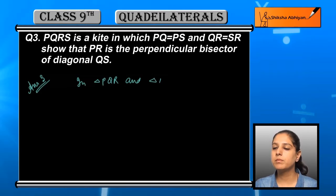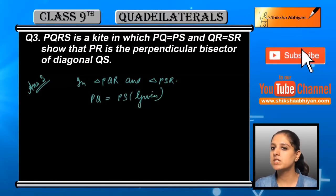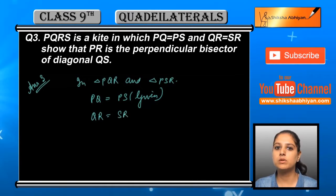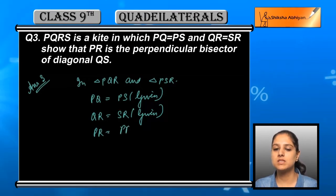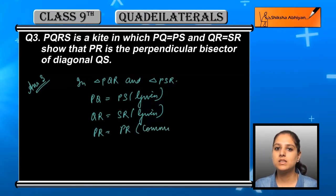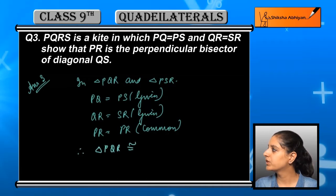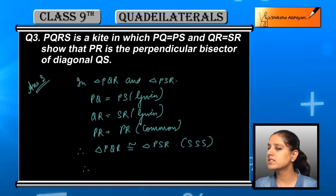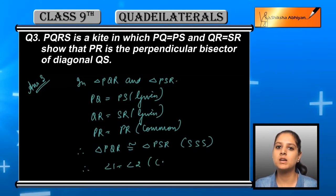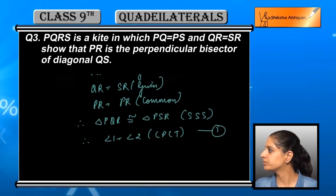First, since the figure is a kite — meaning two pairs of adjacent sides are equal — consider triangle PQR and triangle PSR. PQ is equal to PS (given), QR is equal to SR (given), and PR is equal to PR (common). Due to these three conditions, we can say that triangle PQR and triangle PSR are congruent by the SSS congruence rule. Therefore, angle 1 and angle 2 (as marked in the figure) are equal to each other by CPCT. This is equation number 1.